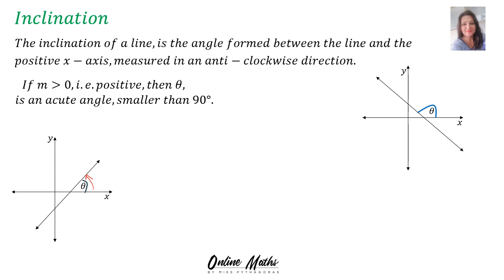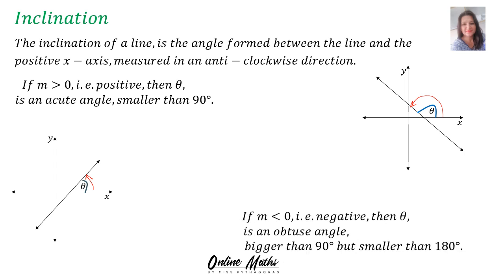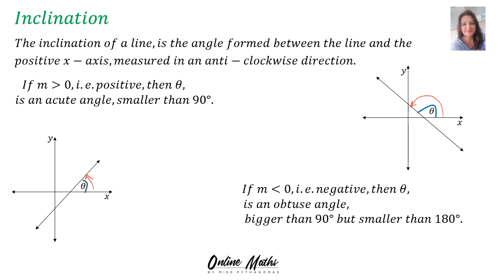If you go to the sketch on the right hand side: again, by definition, the inclination of a line is the angle formed between the line and the positive x-axis measured in an anti-clockwise direction. If your gradient is negative — in other words smaller than zero — then theta, the inclination, is an obtuse angle. An obtuse angle is bigger than 90 degrees but smaller than 180 degrees.